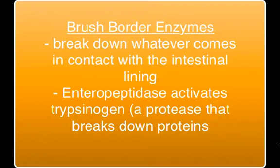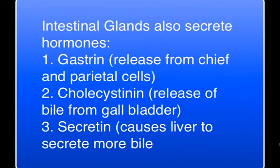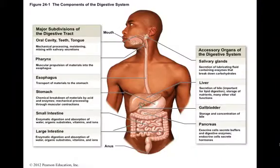Enteropeptidase is a brush border enzyme that activates the pancreatic proenzyme trypsinogen. These intestinal glands also secrete hormones: gastrin, which stimulates parietal and chief cells; CCK (cholecystokinin), which causes bile release from the gallbladder; and secretin, which causes the liver to secrete more bile. Back in the duodenum, the chyme contains amylases, lipases, proteases, nucleases, and bile salts all working together to break down the major macromolecules.